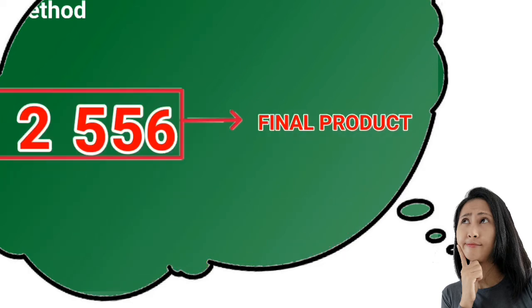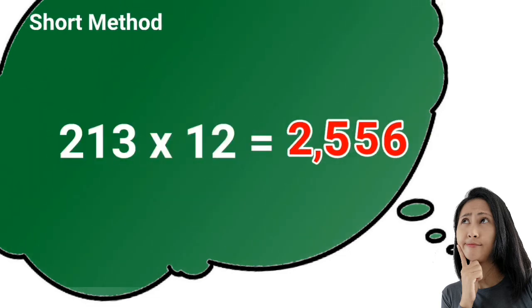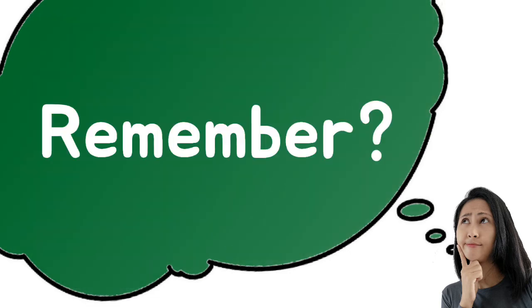The final product is 2,556. So 213 times 12 is 2,556. Remember that?